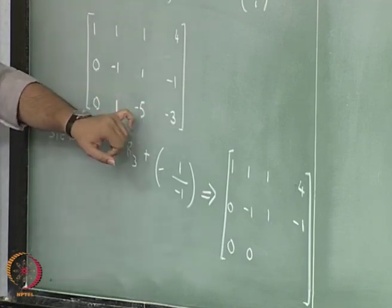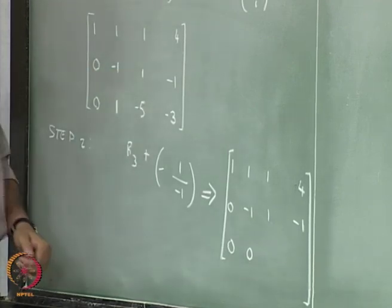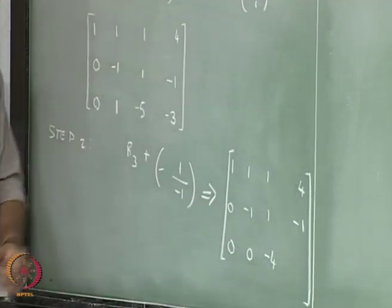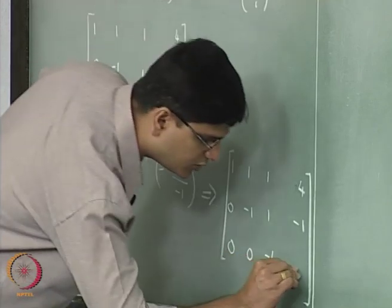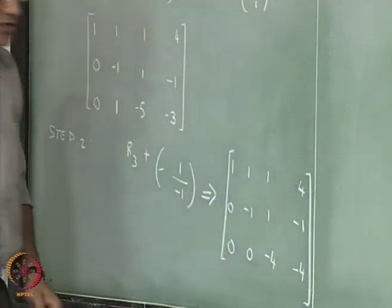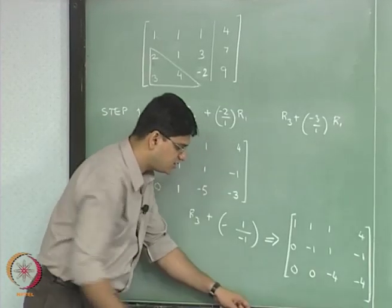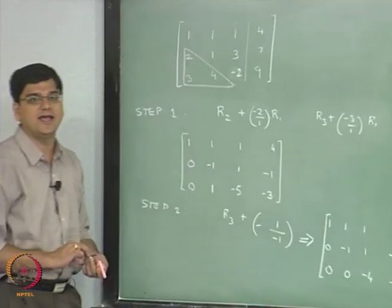The only computations that we will do is -5 plus 1 which is -4, and -3 minus 1 which is also equal to -4. So this is the Gauss elimination process. What I will do in each of the steps is all the elements...